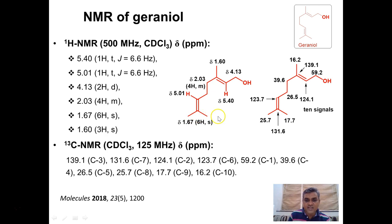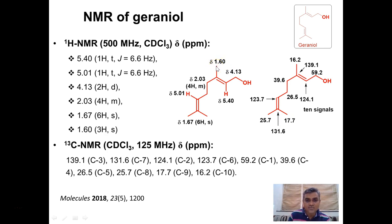In the 1H NMR, olefinic protons appear around 5.40 ppm; the one closer to oxygen is more deshielded due to the oxygen inductive effect. The signal at 4.13 ppm appears as a distinct doublet. The signal at 1.60 ppm appears as a singlet, and two CH2 carbon atoms appear as a multiplet.